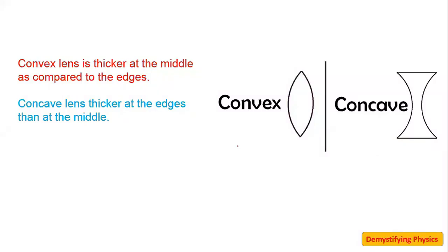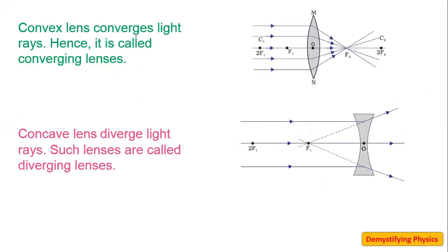In the previous video we discussed about lenses. Let us quickly revise before starting the new topic. Convex lens is thicker at the middle compared to the edges. Concave lens is thicker at the edges compared to the middle. Convex lens is converging in nature — all the rays converge at a point, so it is called a converging lens. Concave lens is diverging in nature; you can see that the rays are diverged.